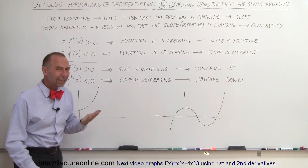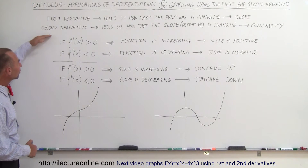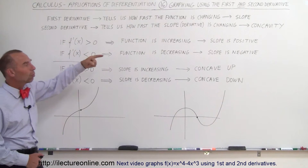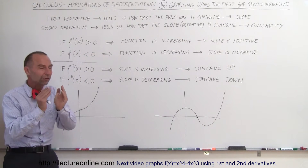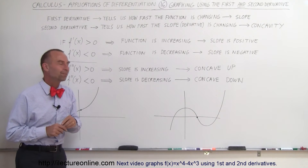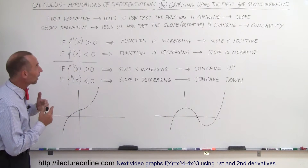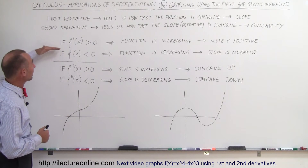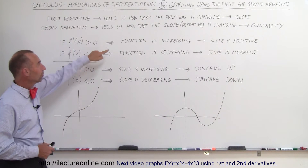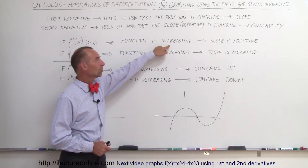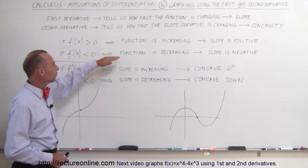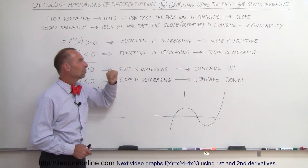What does the second derivative tell us? The second derivative tells us how fast the slope — which is the derivative of the function — is changing. That tells us the concavity. So summarizing: if the derivative is greater than zero, the function is increasing; if the derivative is less than zero, the function is decreasing.